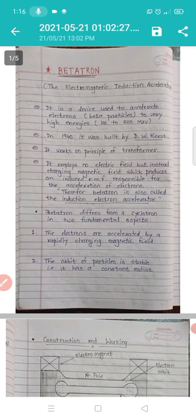Betatron differs from the cyclotron in two fundamental aspects. First, the electrons are accelerated by a rapidly changing magnetic field. Second, the orbit of particles is stable, that is it has a constant radius.